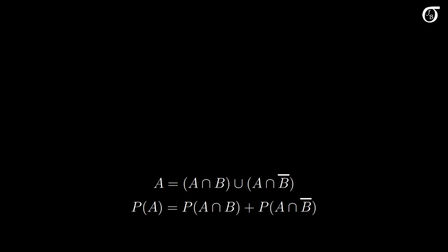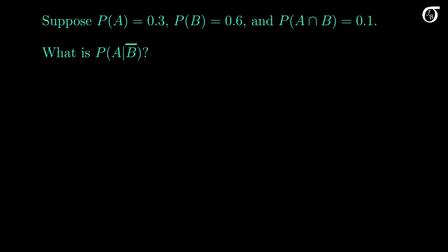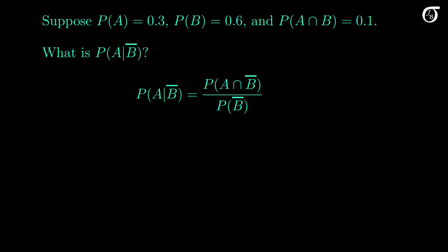Now let's work through an example. Suppose the probability of A is 0.3, the probability of B is 0.6, and the probability of their intersection is 0.1. We need to find the probability of A given B complement. I think it's usually easiest to solve this type of problem by illustrating it with a Venn diagram, but let's work through the formula first. By definition, the probability of A given B complement is the probability of the intersection of A and B complement divided by the probability of B complement. The denominator is easy to find, but some people might find the numerator a little tricky. We might think of trying to use the multiplication rule, but that just leads us in circles. We need to find the probability of the intersection another way.